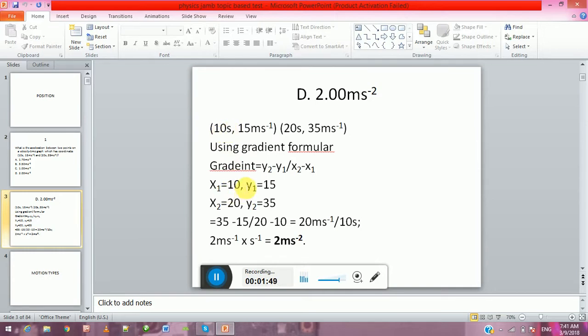for the first one, which is 10. y₁ is the velocity for the first one, which is 15. Now x₂ is time for the second one, which is 20. y₂ is velocity for the second one, which is 35. So putting this inside this formula, we have 35 minus 15 all over 20 minus 10 to give us 20 over 10, which is 2 meter per second square. So this is the answer.